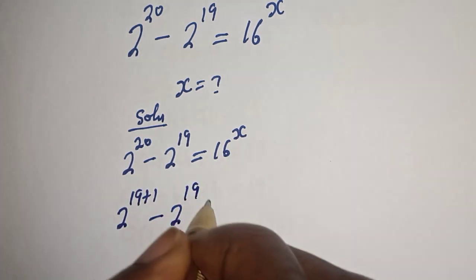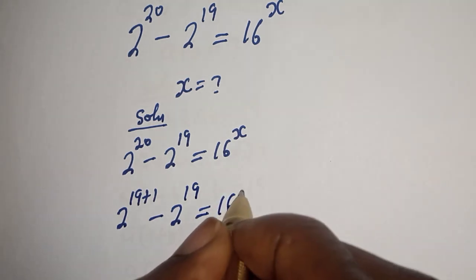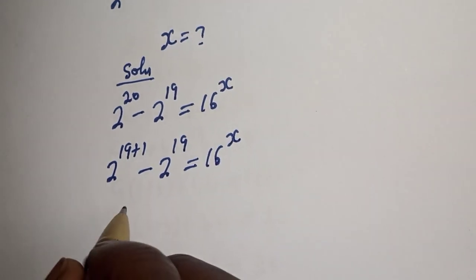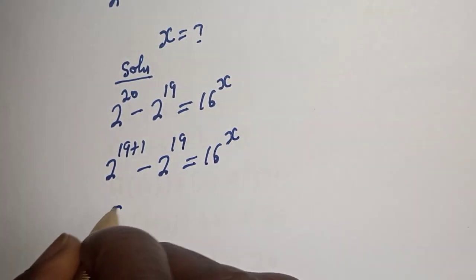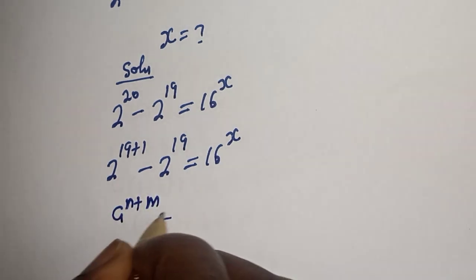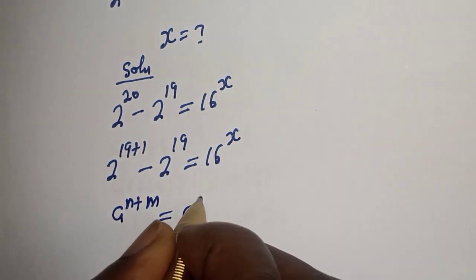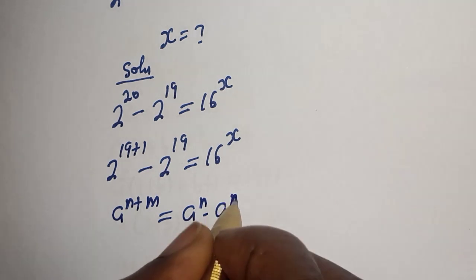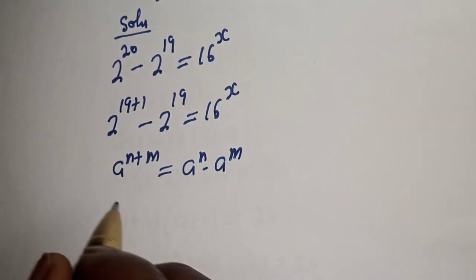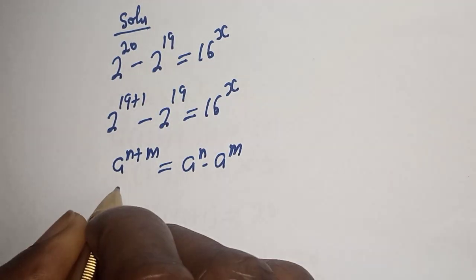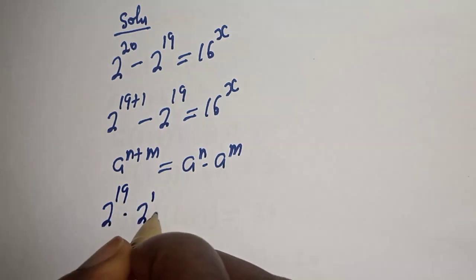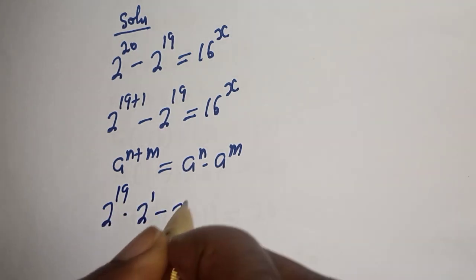Take note of this: if you have a raised to power n plus m, this is equal to a raised to power n multiplied by a raised to power m. Then here we have 2 raised to power 19 multiplied by 2 raised to power 1, minus 2 raised to power 19, is equal to 16 raised to power x.